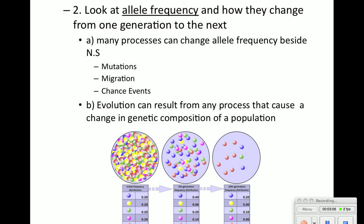We can look at allele frequency and how alleles change over time. Allele frequencies can change based on mutations, migration — organisms and animals do move — as well as chance events like catastrophic events such as a flood, fire, or asteroid. Evolution can result from any process that causes a change in the genetic composition of a population.